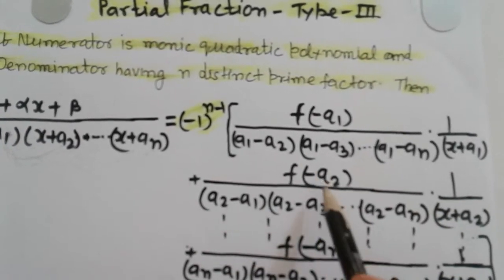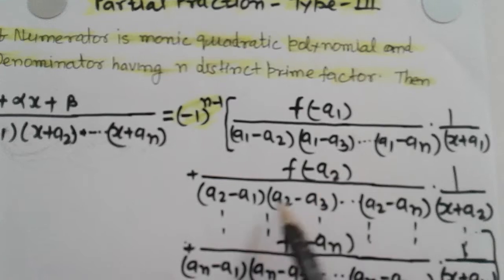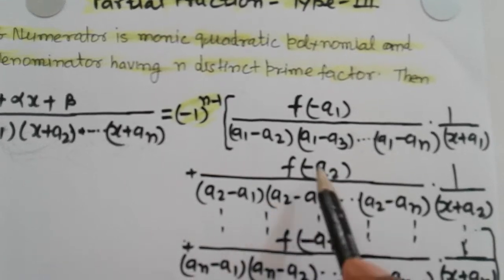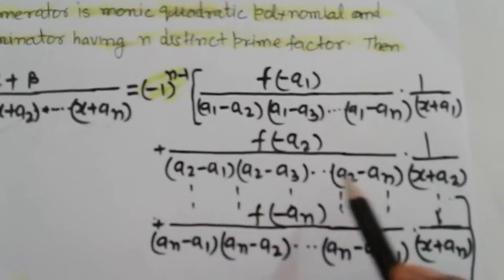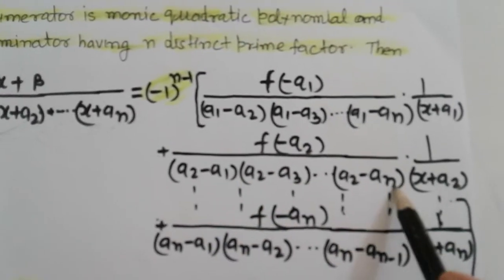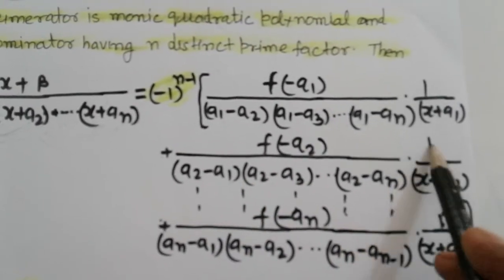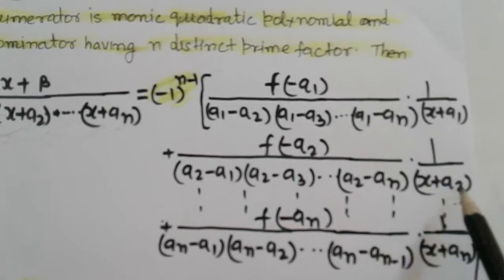Similarly, we find the second term: f of minus a2, divided by (a2 minus a1)(a2 minus a3)...(a2 minus an), dot 1 upon (x plus a2).